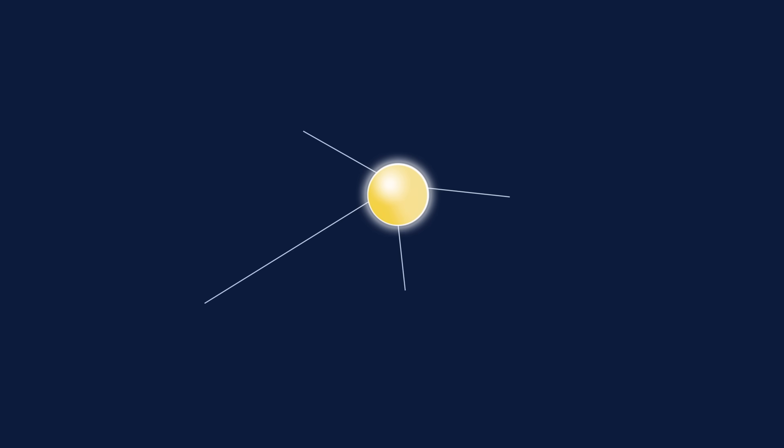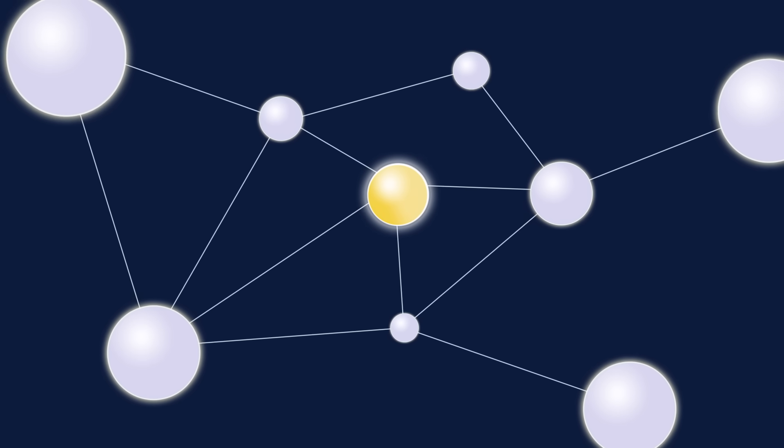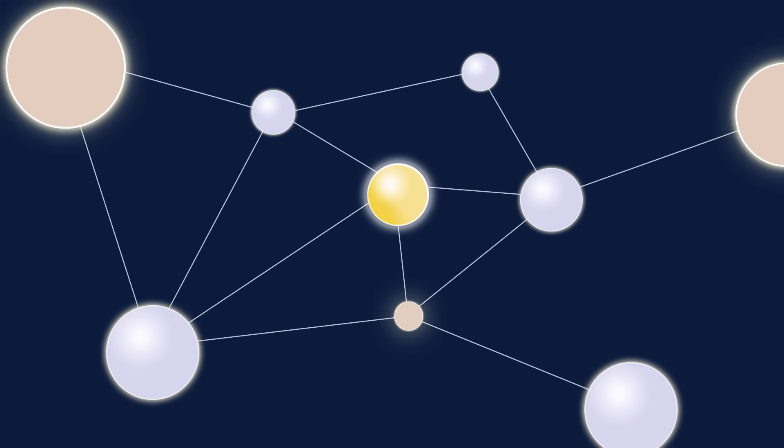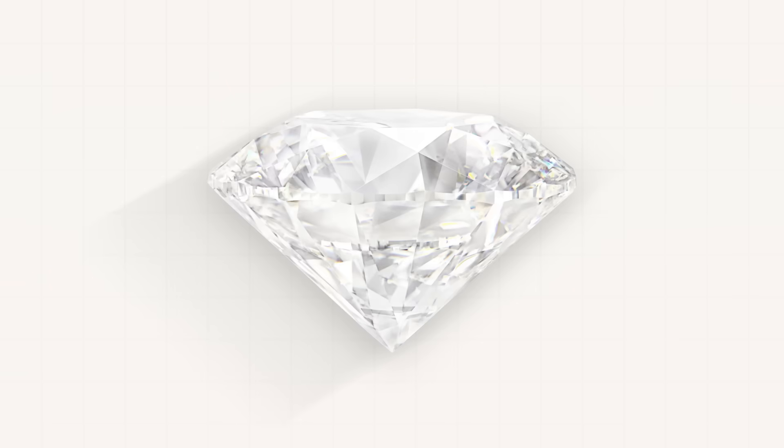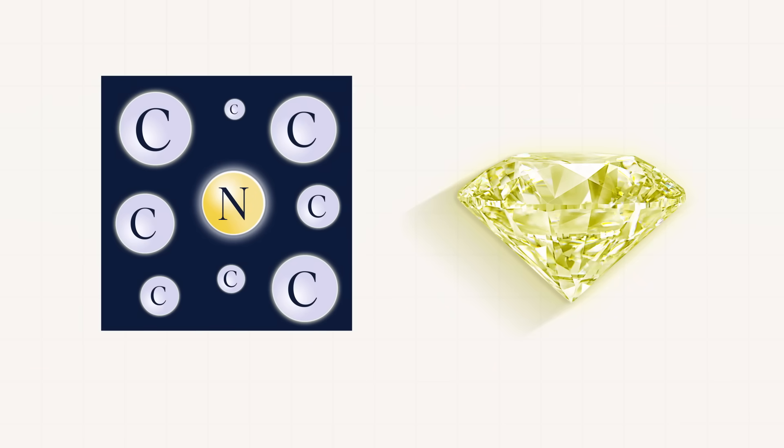During a natural diamond's formation, carbon atoms make unique bonds with each other. Sometimes, other elements present in nature interact with them, giving the diamonds their splendid colours. For instance, nitrogen causes a beautiful yellow colour in natural diamonds,